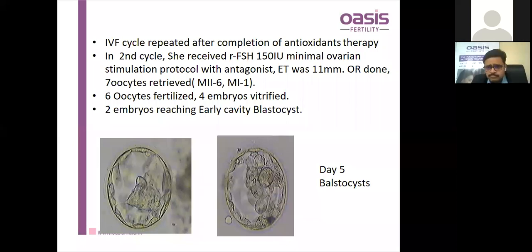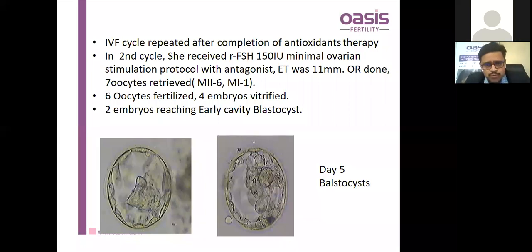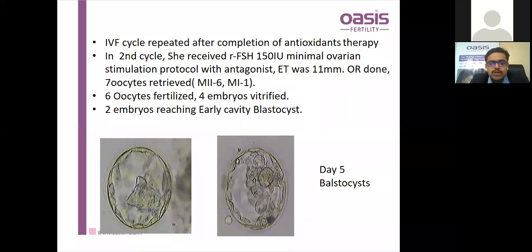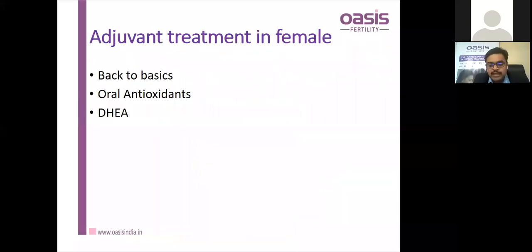Subsequently, this patient received a minimal ovarian stimulation protocol — 150 IU of rFSH or HMG in an antagonist cycle, with antagonist started when follicle size reached 12mm or more. Seven oocytes were retrieved, six were MII, all six were fertilized, four embryos were of good quality and vitrified, and two good blastocysts on day 5 were transferred. The patient then had a positive beta-HCG.